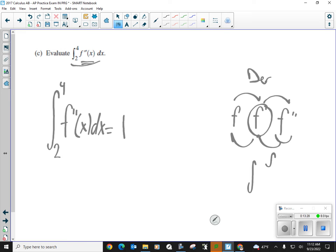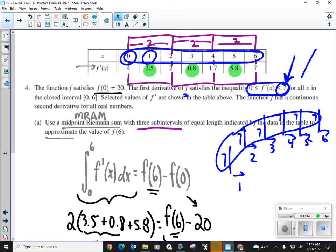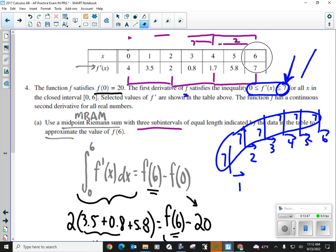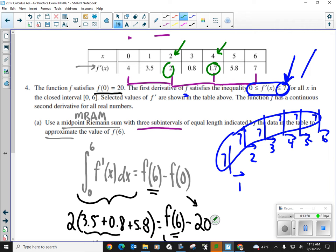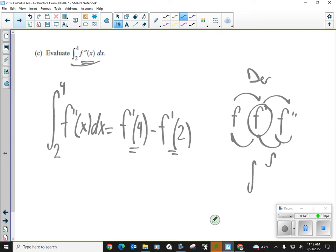So if I integrate f double prime from 2 to 4, that will give me f prime from my upper bound and the difference or subtraction of f prime to the lower bound, okay? These values are in our table, okay? If we go back to our table, what a mess, okay? F prime of 4 is 1.7, and f prime of 2 is 2, okay?